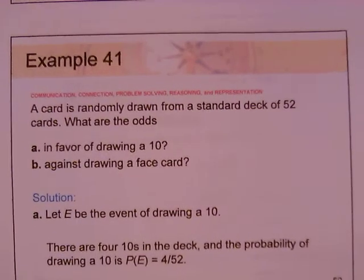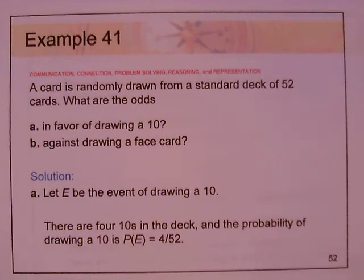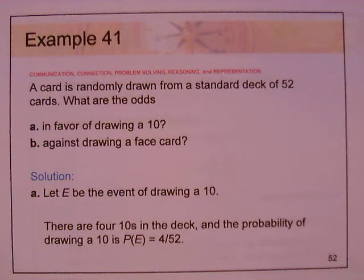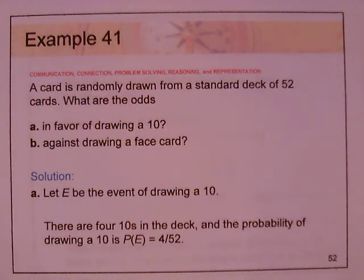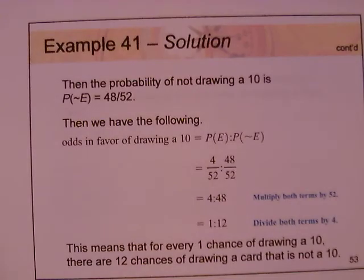Take a look at problem 41. A card is randomly drawn from a standard deck of 52 cards. Part A: what are the odds in favor of drawing a 10? There are four 10s in a deck of 52 cards, so the probability of drawing a 10 is 4 over 52. The probability of not drawing a 10 is 48 over 52.